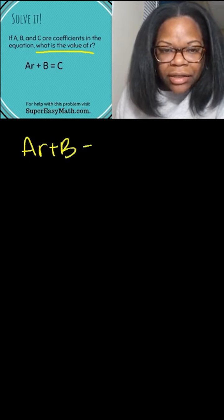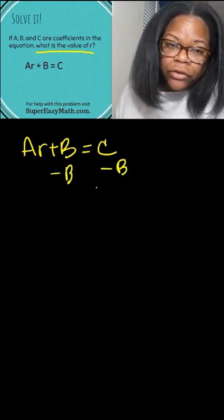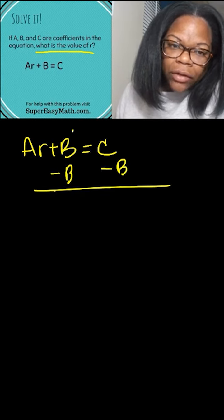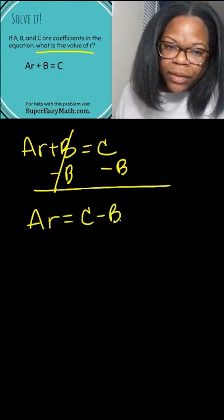So in this case, AR plus B equals C, the C is in good shape because it's already away from the R. It's on the opposite side of the equal sign. The B needs to be reversed. So that's minus B instead of plus B, but you got to do it to the opposite side as well. So you're left with AR equals C minus B.